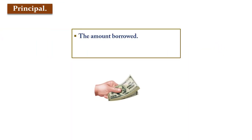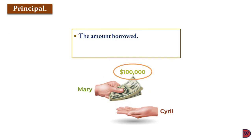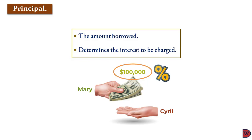Principal is the amount that the lender actually pays out to the borrower. In the earlier example, Mary giving $100,000 to Cyril, the $100,000 becomes the principal. This principal determines the amount of interest that will be paid, because the interest will be a percentage on the outstanding amount.